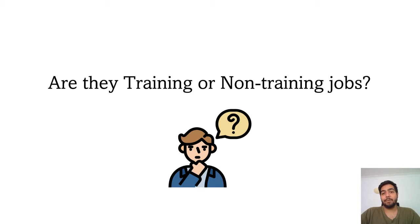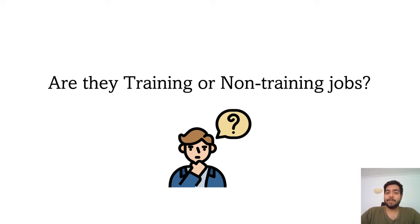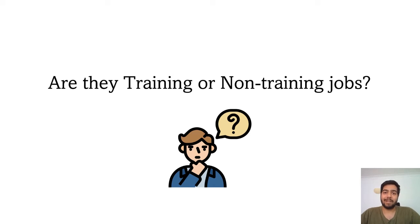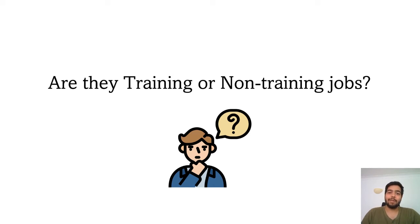You can apply for a training post at any of those levels — for example, an F1 or F2 training post — or you can apply for a non-training post at an F1 or F2 level. I've made a different video talking about the difference between a training post and a non-training post, so you can check that out as well. Any of those job posts can be a training post or a non-training post. It just depends on how you have applied and what your priorities in life are.